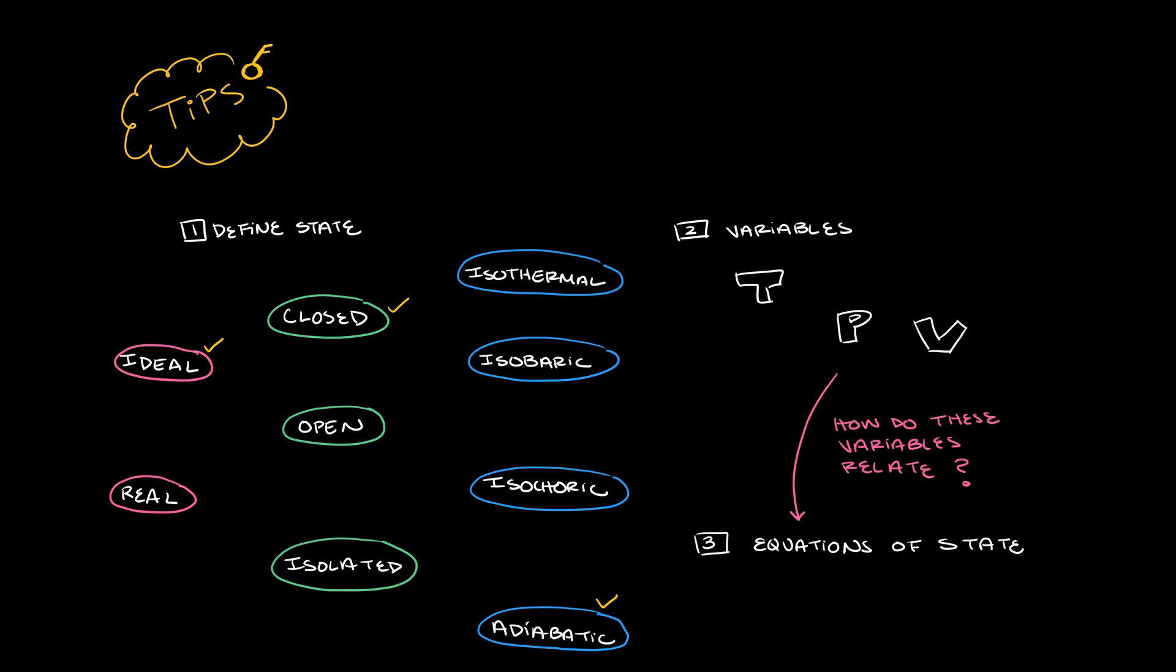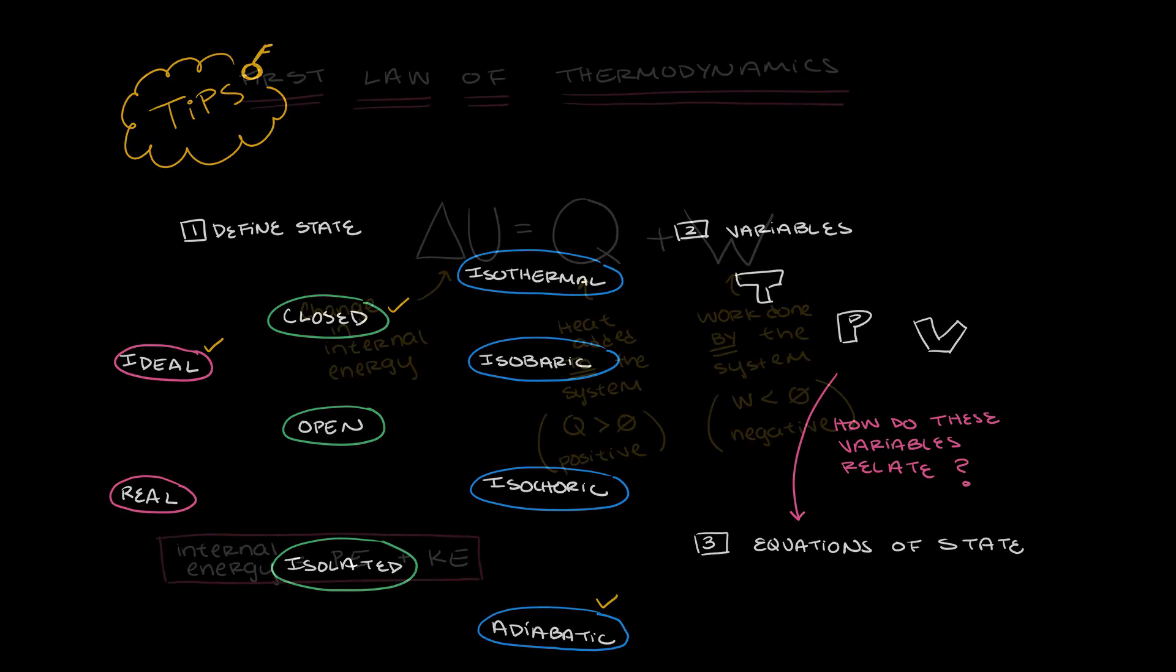From completely describing the classical system, you are now able to control it, or at least predict its behavior. Next, you want to think about the energy changes involved in the change of state.